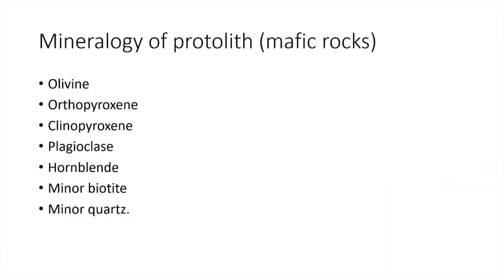Next, we consider the mineralogy of the protolith. Originally, these are mafic igneous rocks, so the protoliths shall contain olivine, orthopyroxene, clinopyroxene, plagioclase, hornblende, minor biotite, and a little bit of quartz. This is the mineralogy of the protolith.